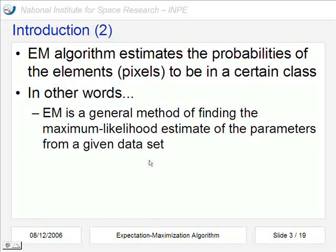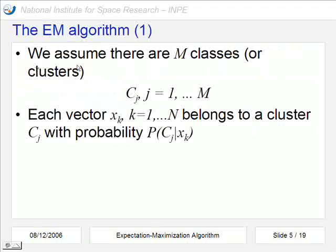In other words, EM is a general method of finding the maximum likelihood estimate of the parameters from a given data set. In the beginning we assume that there are m classes or clusters represented by index j. Each of the n vectors x, which are vectors of attributes, belongs to one of these m clusters.